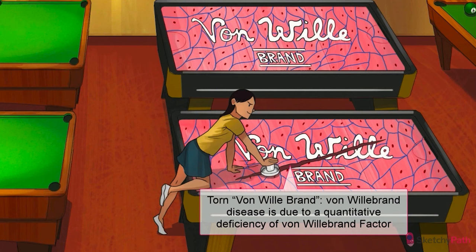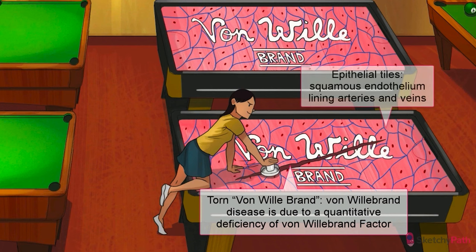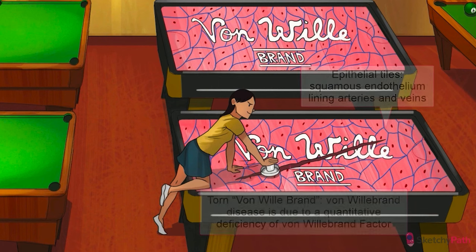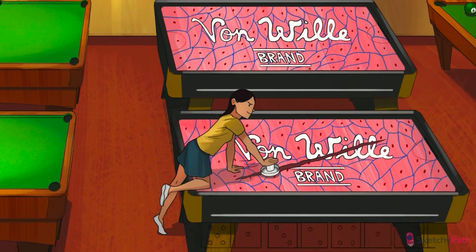Let's talk about those vessels — that's where the bleeding is happening, after all. On top of the air hockey tables, we've recreated that characteristic squamous endothelial surface that lines all arteries and veins. And you see that big gash through the logo? Let's find out what happens when normal factor production is interrupted.